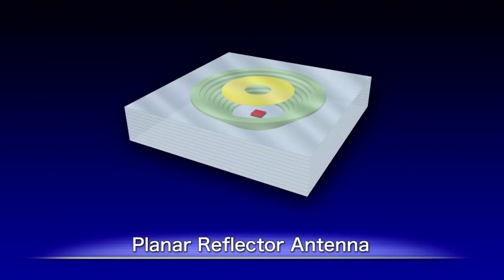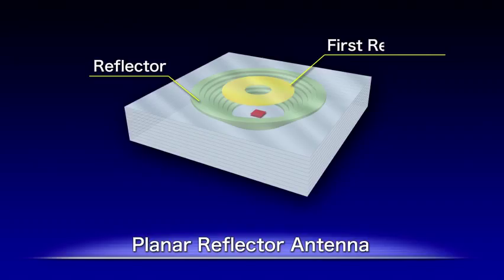The chip embeds a planar reflector antenna. The reflector consists of multi-layer rings and a first reflector having a slot.